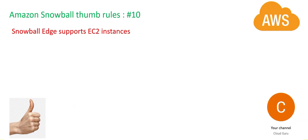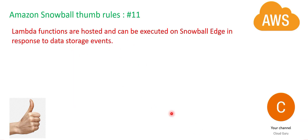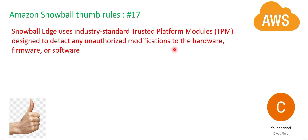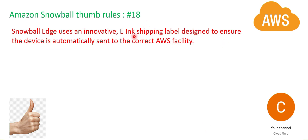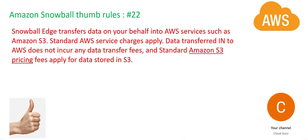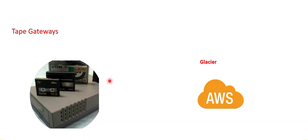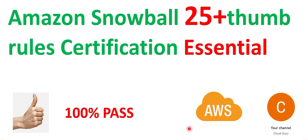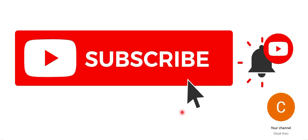There are two types of Snowball: compute optimized and storage optimized, plus GPU optimized. Snowball is dispatched using UPS services. Snowball can host EC2 instances as well as Lambda functions. Data in Snowball is encrypted — even hardware and firmware — and any unauthorized changes can be tracked. It automatically contains the e-ink shipping label so it does not go to the wrong AWS address. Data transfer into AWS is free. Use tape gateway with flexible or deep archive for backup tapes. Use the SDK adapter to read and write data to a Snowball.